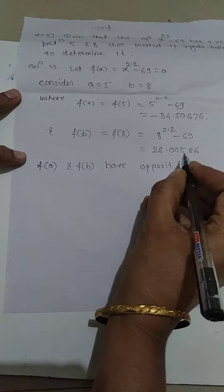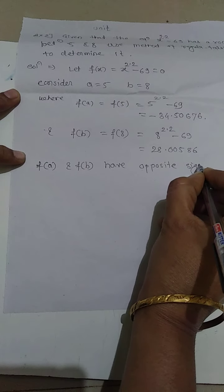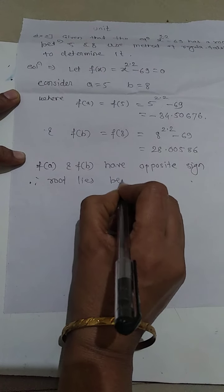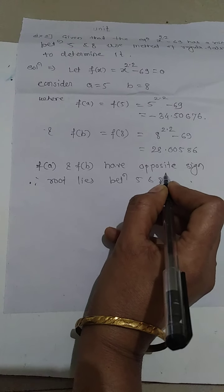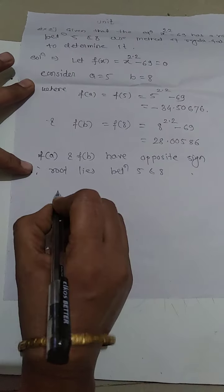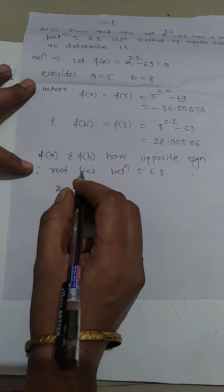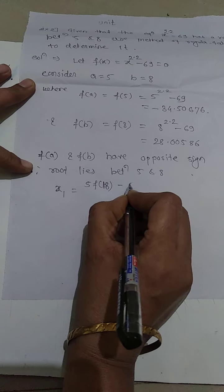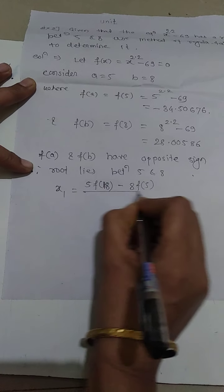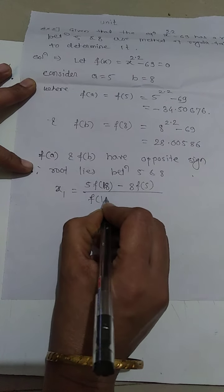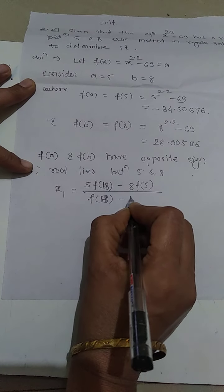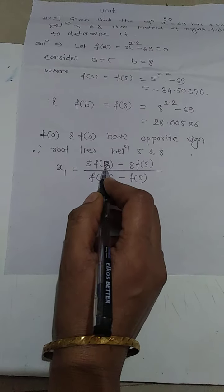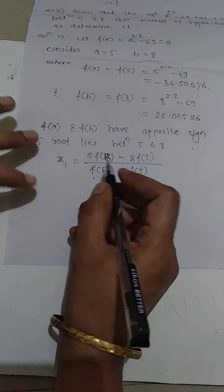Therefore the root lies between 5 and 8. By the Regula Falsi method, the formula is: x1 = (a·f(b) − b·f(a)) / (f(b) − f(a)).